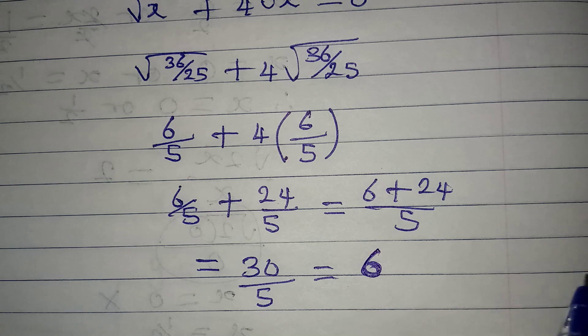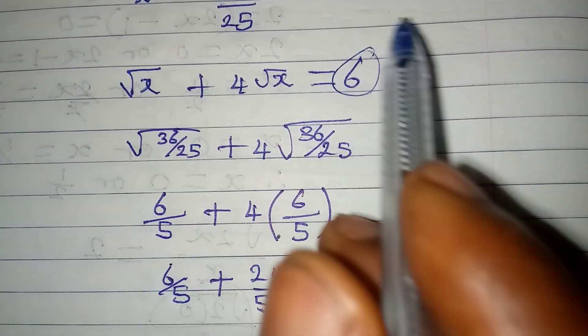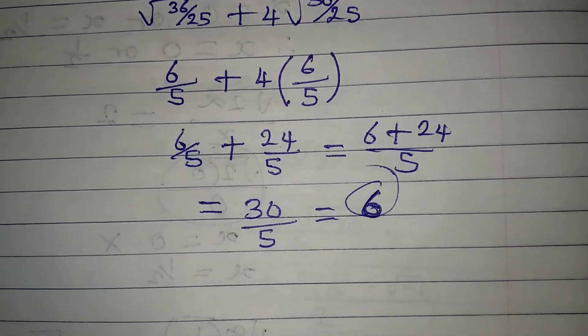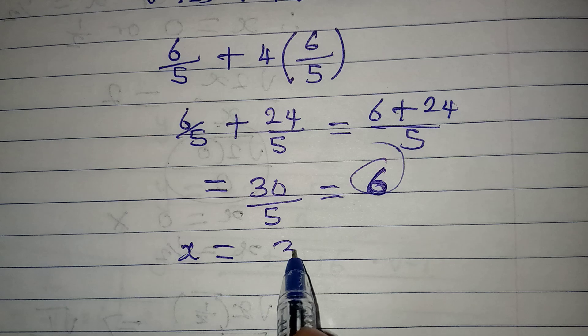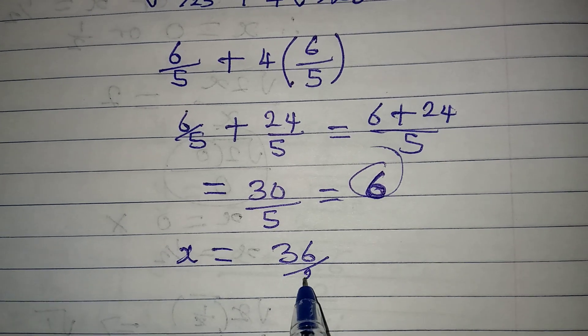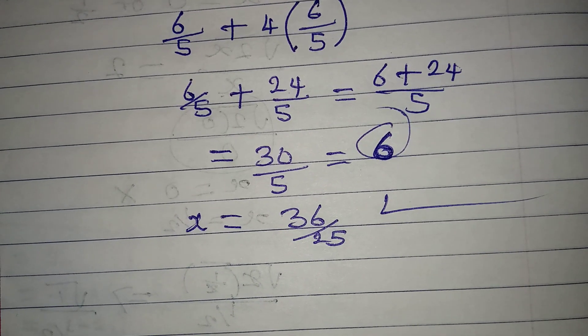And it is six that we had on the right hand side, so this confirms that our x being equal to 36 over 25 is very correct. Thank you for watching.